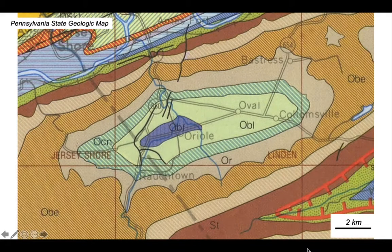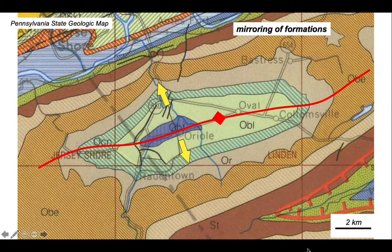So let's analyse this. We can identify that there is a symmetrical arrangement around an axis of symmetry, something like this, where the sequence of rocks, if you move out in the direction of the yellow arrows, is mirrored across the axis of the fold.